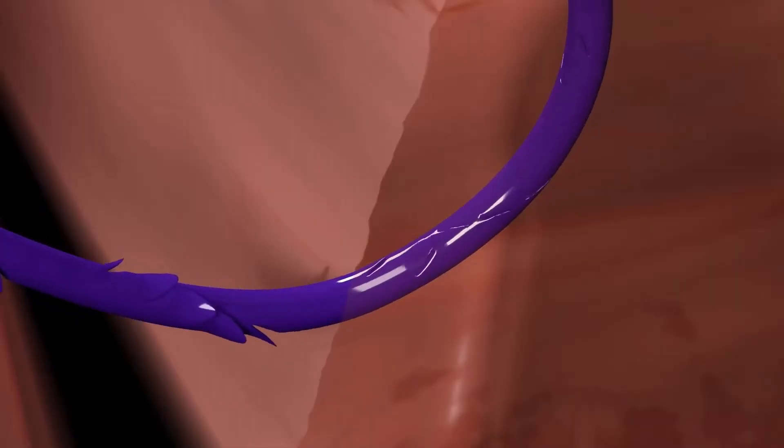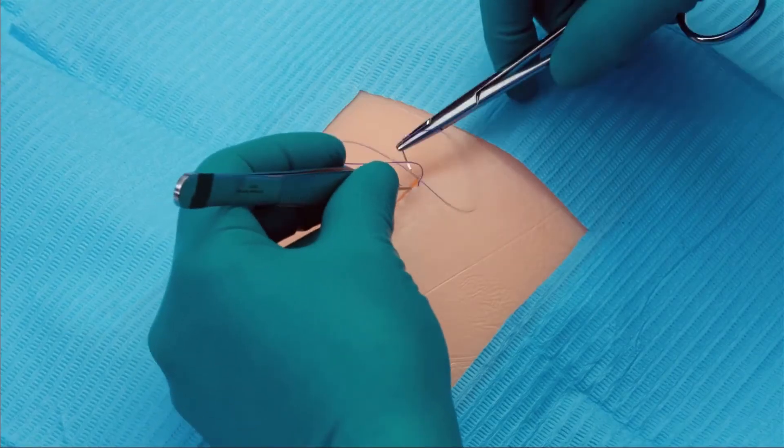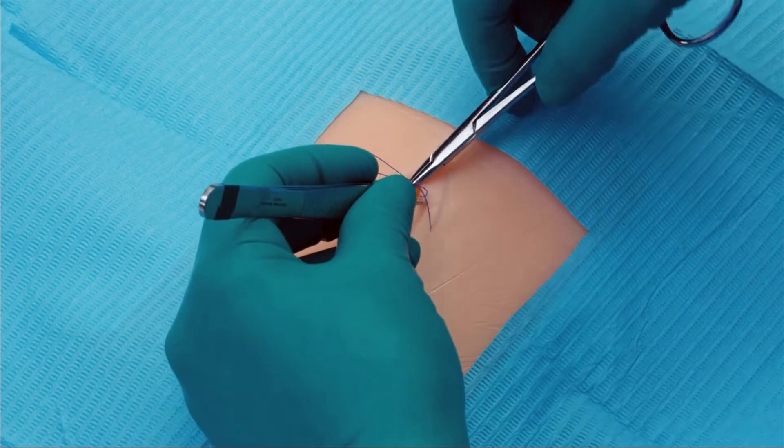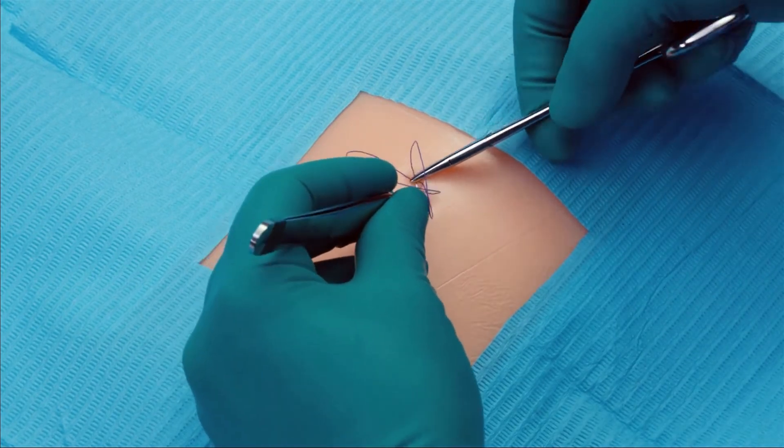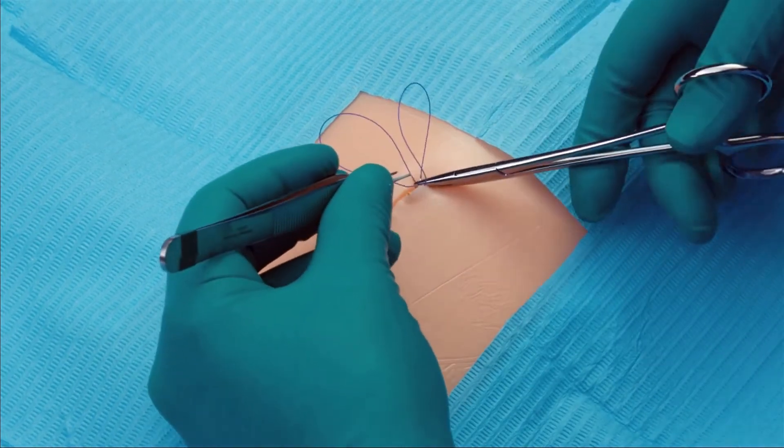The barbs on the quill device retract flush with the suture during deployment, and then anchor into the tissue for secure fixation. We then proceed with the closure of the deep dermis by running the quill device in a simple, continuous fashion.